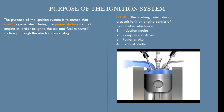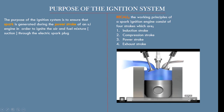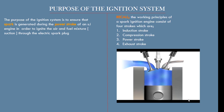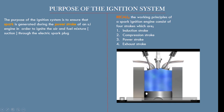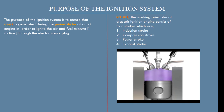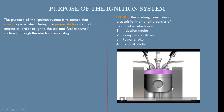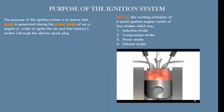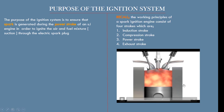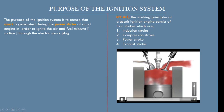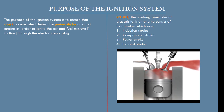The four strokes are: the induction stroke, the compression stroke, the power stroke, and the exhaust stroke. During the induction stroke, the intake valve opens to allow a mixture of air and fuel to fill the combustion chamber. Next, the intake valve closes and the piston moves upward, compressing the air-fuel mixture — this is the compression stroke, which makes the mixture combust with greater force. Third, the spark plug ignites the air-fuel mixture, causing it to burn explosively and force the piston downward — this is the power stroke. Fourth, during the exhaust stroke, the exhaust valve opens and the burned air-fuel mixture is forced out of the combustion chamber.